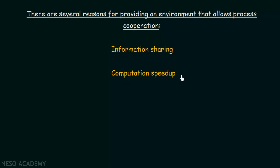The next point is computational speed-up. In order to achieve computational speed-up, if we are having a task, we will divide that task into several subtasks and all these subtasks will be made to run concurrently. Instead of waiting for one task to complete from beginning to end, we can break it down into subtasks running concurrently and achieve more speed. When the tasks are broken down and assigned to several different processes, since all these processes belong to one main task, those processes will need to communicate with each other.